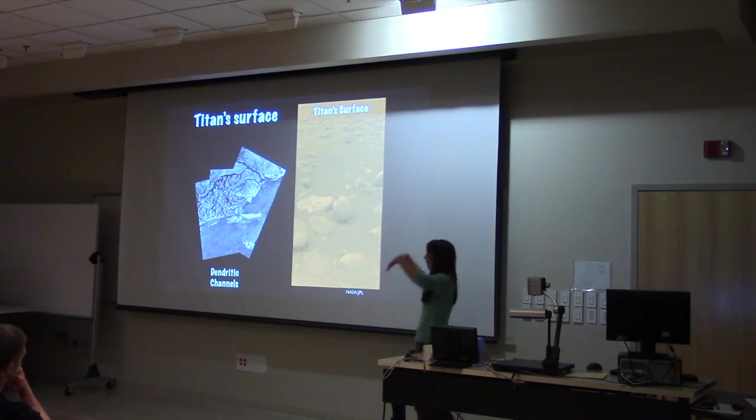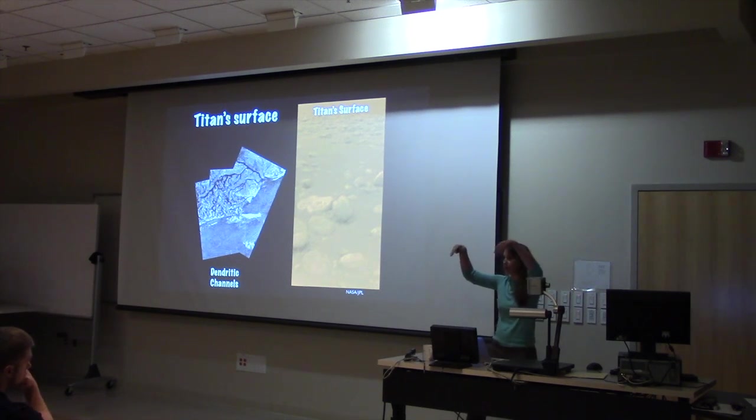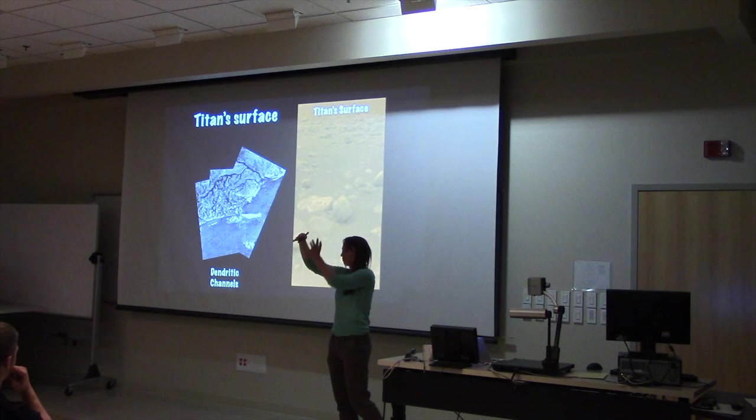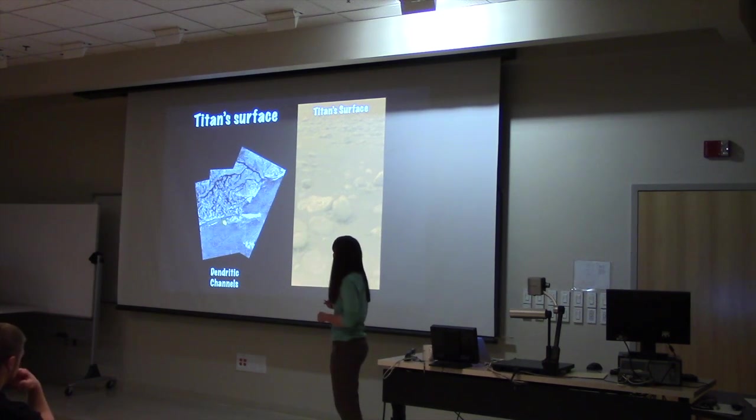These are known as dendritic channels. And what causes these channels to form on the Earth is rainfall, basically. So if you're hiking and you get higher and higher in the mountains, you'll notice that the streams are thinner and thinner and more numerous. As those streams travel down the mountain, they combine with other streams and make bigger and bigger channels.